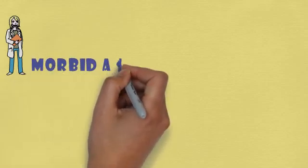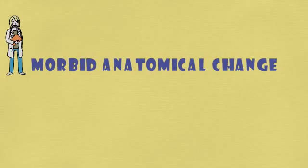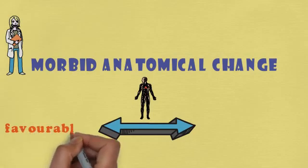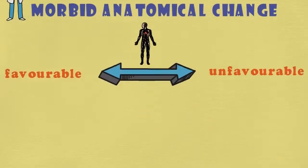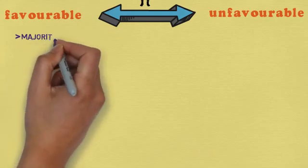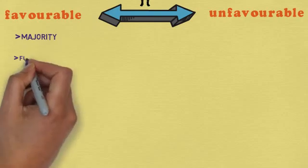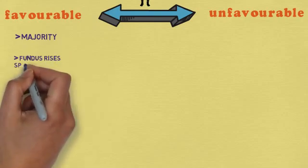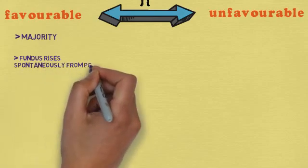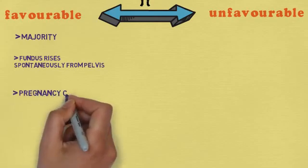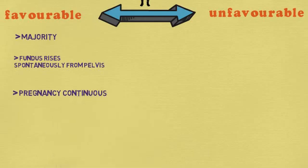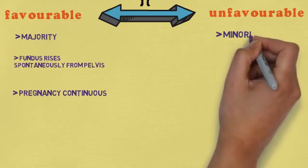Next we are going to discuss about morbid anatomical changes — if left uncared, what are the morbid anatomical changes? Any morbidity or illness causing anatomical changes is called morbid anatomical changes. We divide that into two: favorable and unfavorable. In the favorable outcome, the majority of cases are rectified spontaneously. As the uterus grows, the fundus rises spontaneously from the pelvis and the pregnancy continues normally.